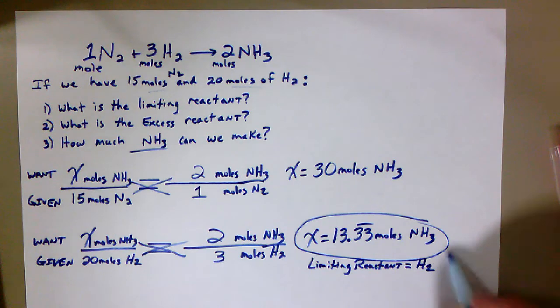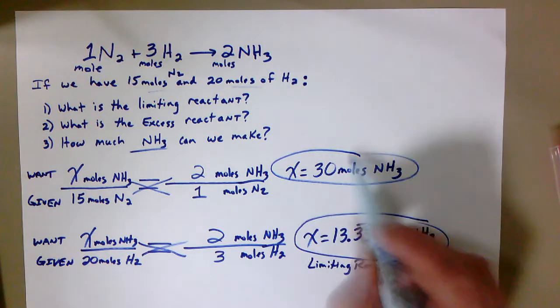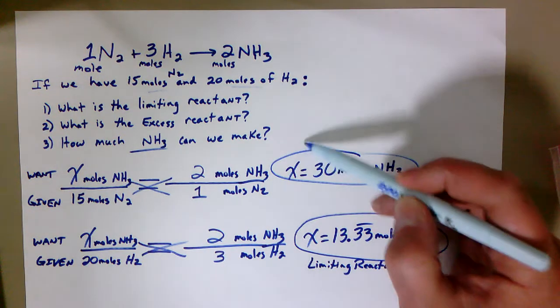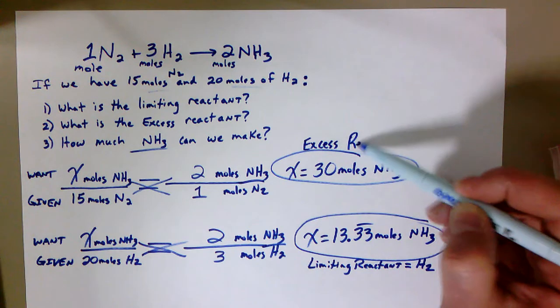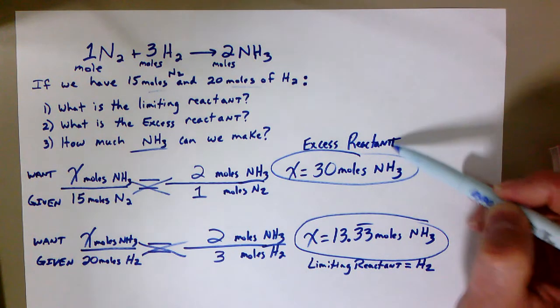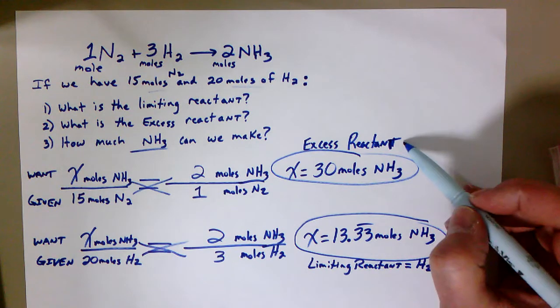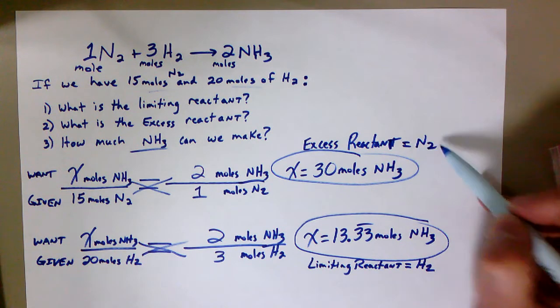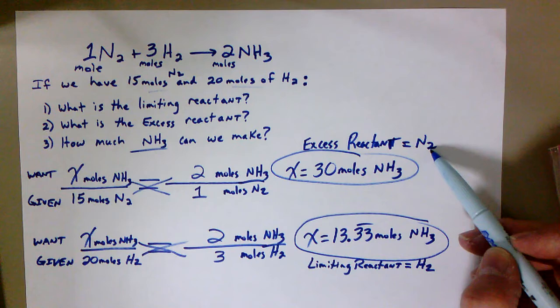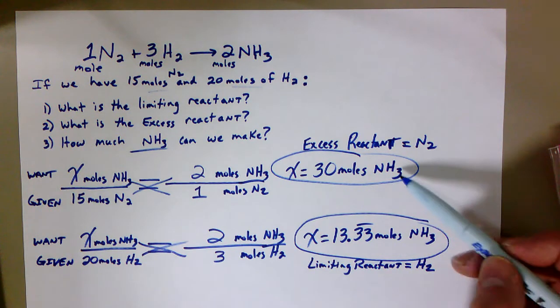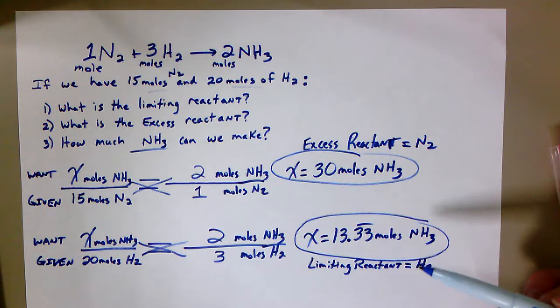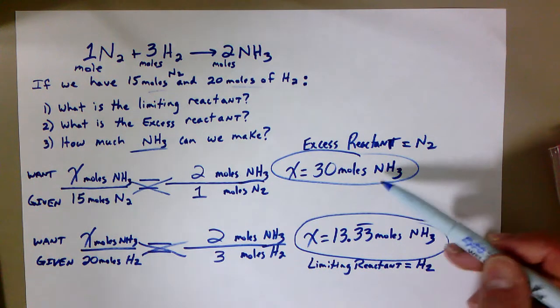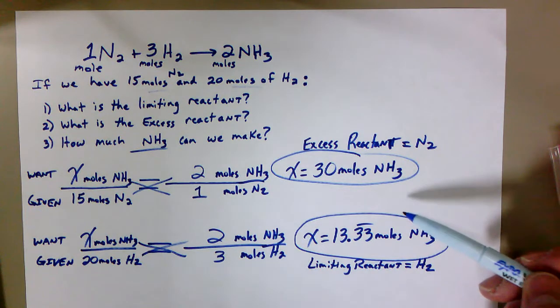This right here then is showing us our excess reactant. And the excess reactant isn't NH3. The excess reactant is actually the N2. The N2, there's enough of the N2 to make 30 moles, which means there is extra or excess N2. We have more than we need because it's enough to make extra NH3.